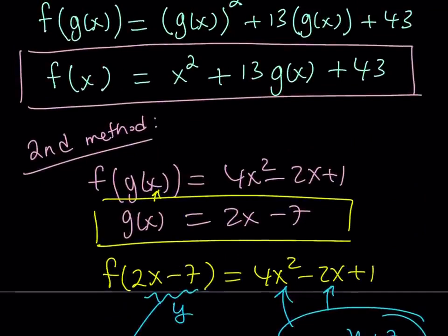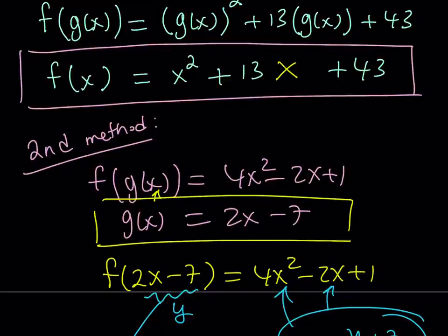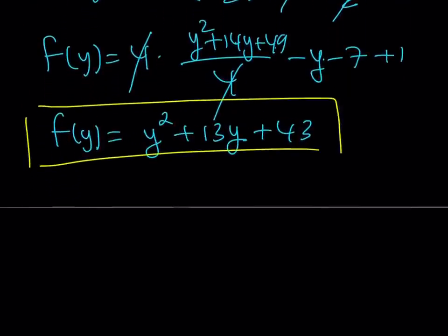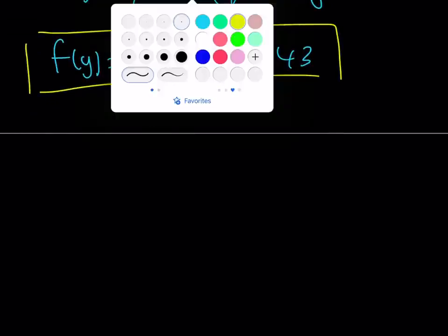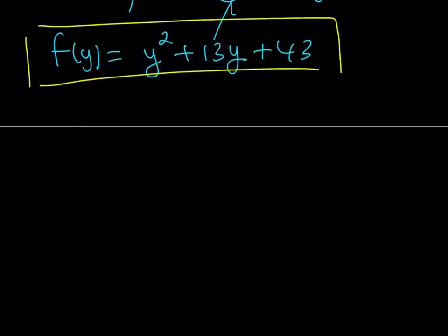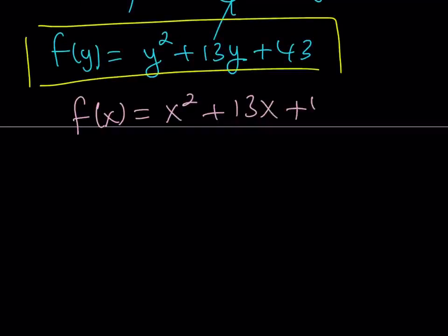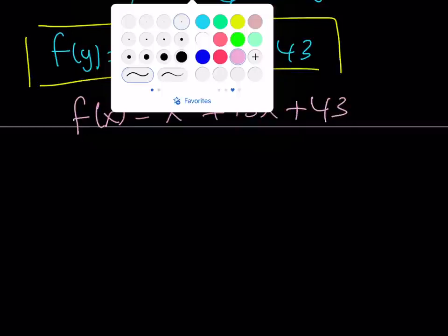So f of y equals y squared plus 13y plus 43 — and that's not the final answer yet. My goal is to find f of x, so let's make the replacement. Replacing y with x gives f of x equals x squared plus 13x plus 43, the same as before. This concludes the second method.